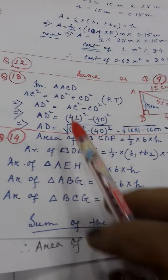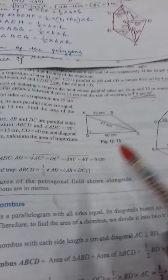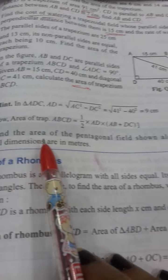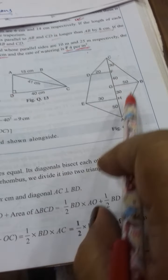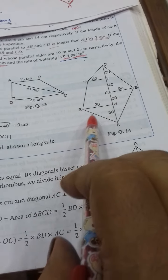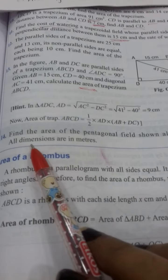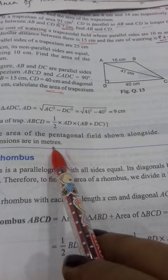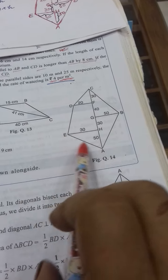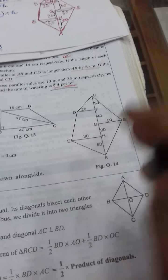So this is question number 13. Now question number 14 is totally different. Here it is given: find the area of the pentagonal field. It is a pentagonal field. Pentagon means 5 sides — 1, 2, 3, 4, 5. All dimensions shown are in meters. You have to find out the area of the pentagon.